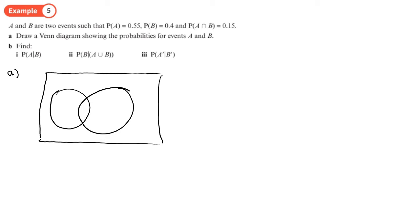We've got the intersect of A and B. So I can put 0.15 in that overlap, always fill in the overlap first, which means that I've got 0.4 left for A. And if I take 0.15 away from 0.4, I'm left with 0.25. So 0.25 goes here.